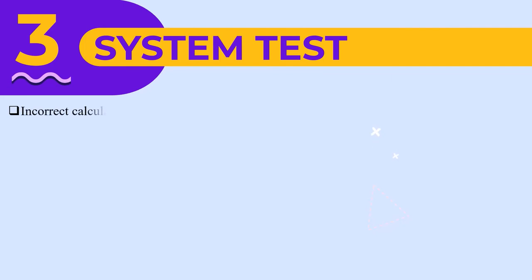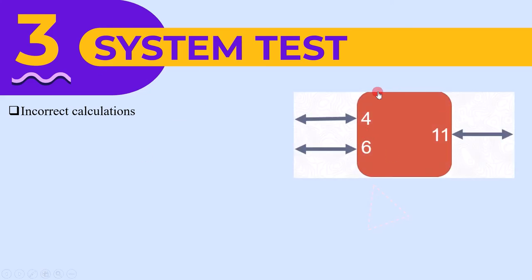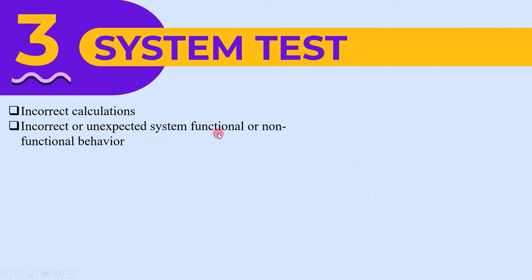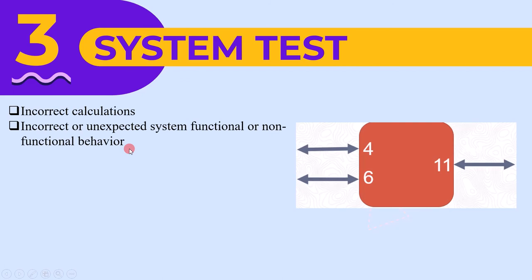Now let's look at defects found during system testing. The first is incorrect calculation — in system testing we provide input and compare the output. For example, if a calculator receives four and six as input but calculates 11 as output, the system is calculating wrong. The next defect is incorrect or unexpected system functional or non-functional behavior: if we expect an output of 10 but get 11, the system is not functioning as expected.